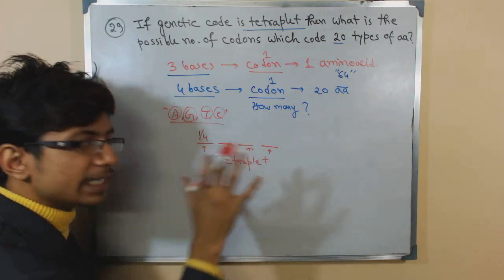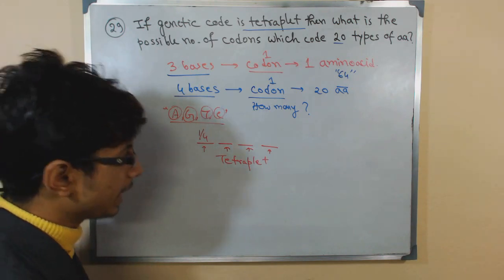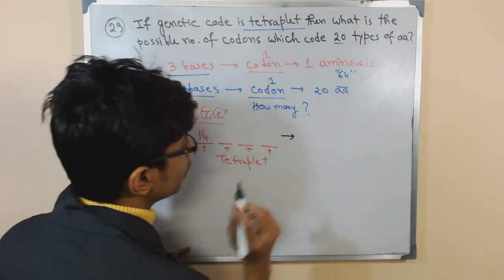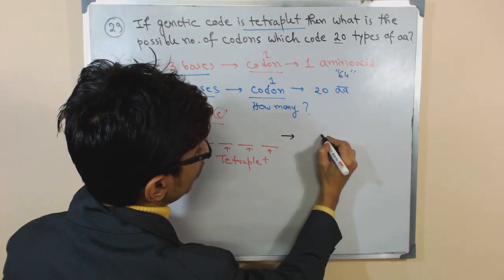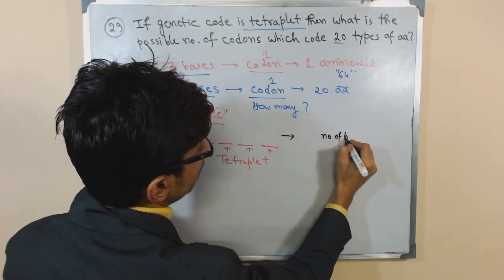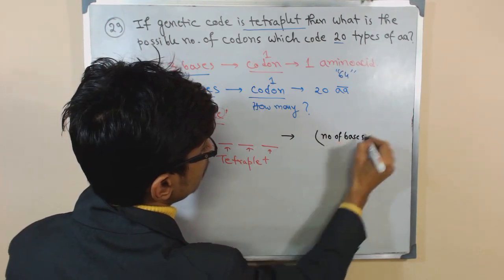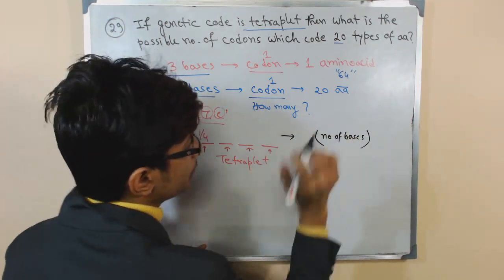Now to construct this idea in mathematical form, what we can get is simple. We place here the number of bases that is present to the power of number of bases to construct the codon.